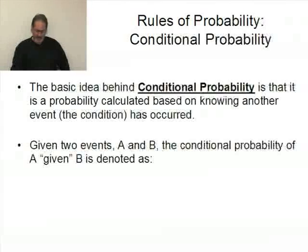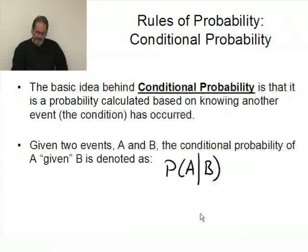Given two events A and B, the conditional probability of A given B is denoted as the probability of A, we use a vertical bar to represent given B. The probability of A given B.